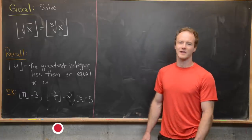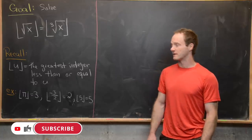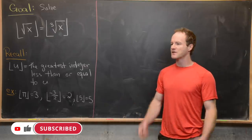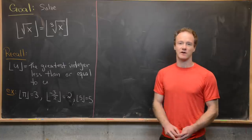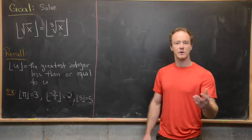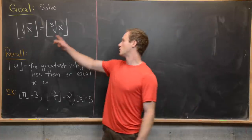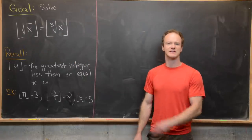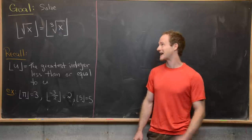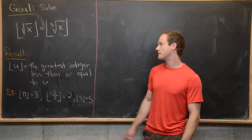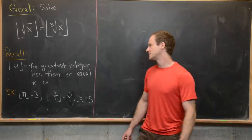Long-time viewers of the channel may know that I have some weird interest in equations involving the floor function. I thought we hadn't done one in a while, so we might as well solve one. We're going to solve the floor of the square root of x equals the floor of the cube root of x — find all real numbers x that satisfy this equation. First, let me recall what the floor function is.